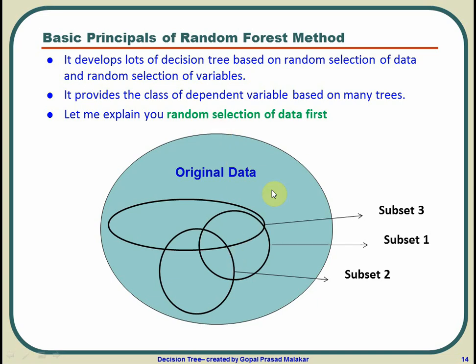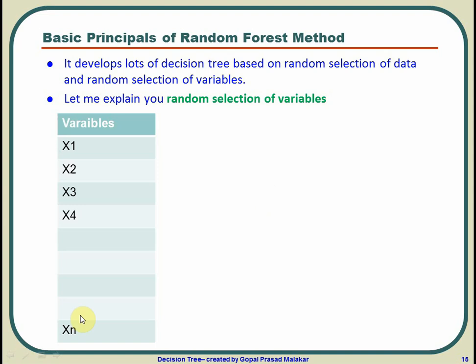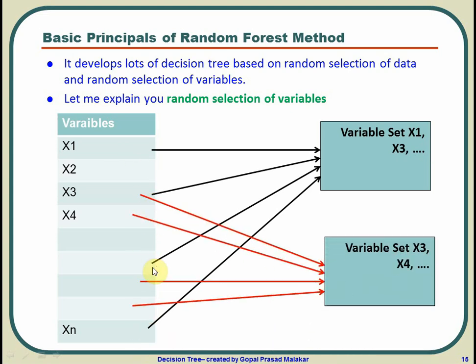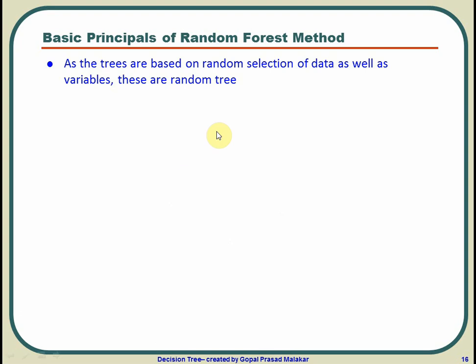That's the random selection of data. The second part is that if there are x1 to xn independent variables which can be used for developing decision tree, it may happen that in first go you took x1, x3 and some variables. In second go you took x3, x4 and some other variables. So essentially, you selected random subset of data as well as you selected random subset of variables, independent variables to grow the tree.